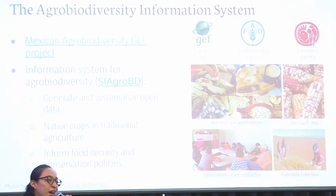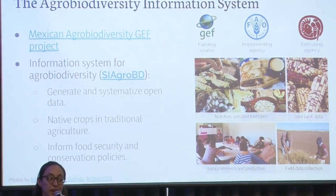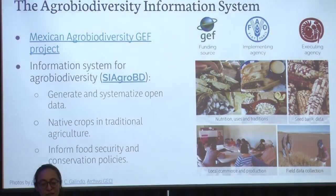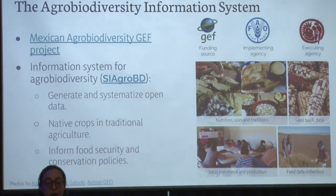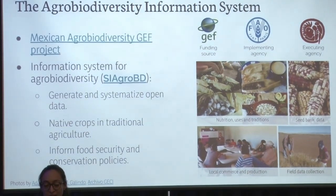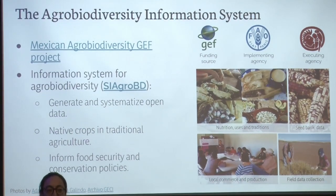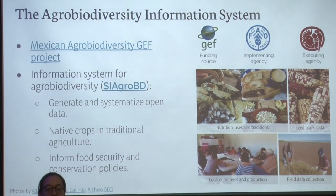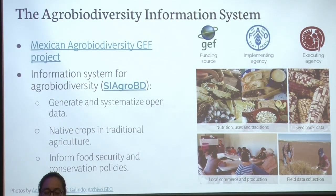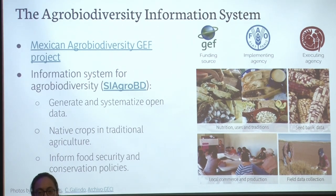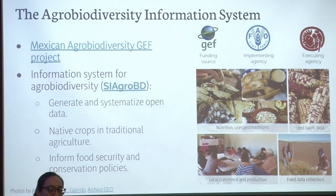For the past five years or so, we have been developing a new information system. This one is focused on agro-biodiversity conservation, and it is part of a larger project which has the Global Environment Facility as the funding source and the Food and Agriculture Organization as the implementing agency. This just means that FAO oversees the project from beginning to end, and they are also the institution who evaluates the project.